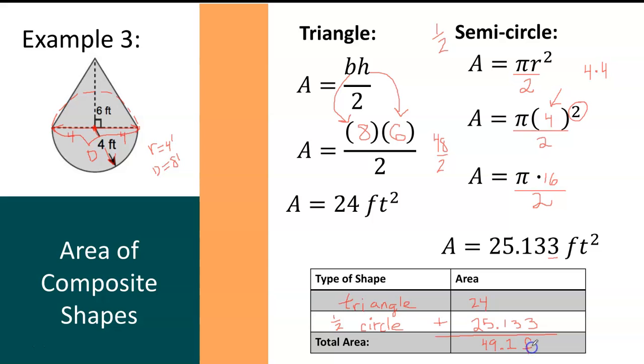And at the end, I want to make sure that I write square feet. Remember for area, the units are always square units. 49.1 square feet represents the area of this entire surface, the area of this entire composite shape.